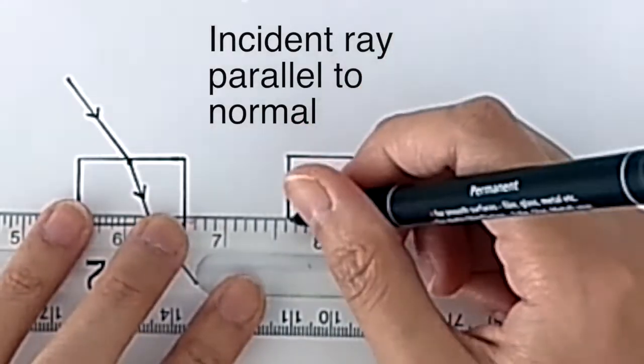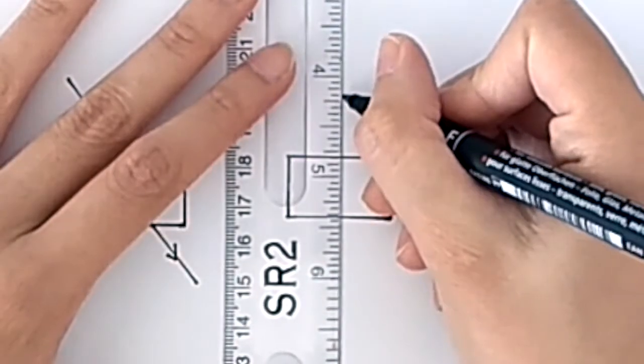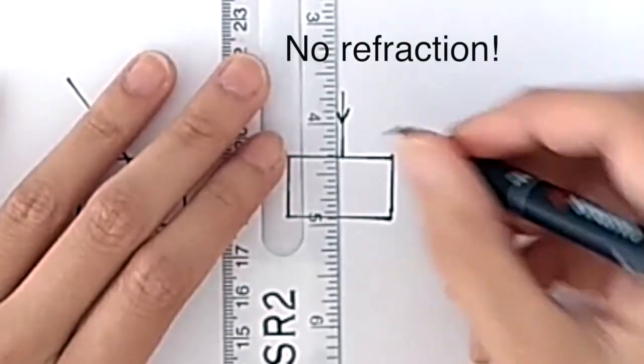What if my incident ray is parallel to the normal? It's not going to refract. Remember rule number three.